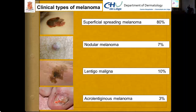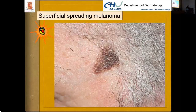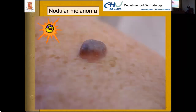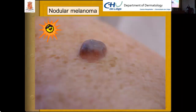Superficial spreading melanoma is characterized by a horizontal growth phase. Nodular melanoma, in contrast, is characterized by a vertical growth pattern, giving a higher risk of metastasis to the lymph nodes.